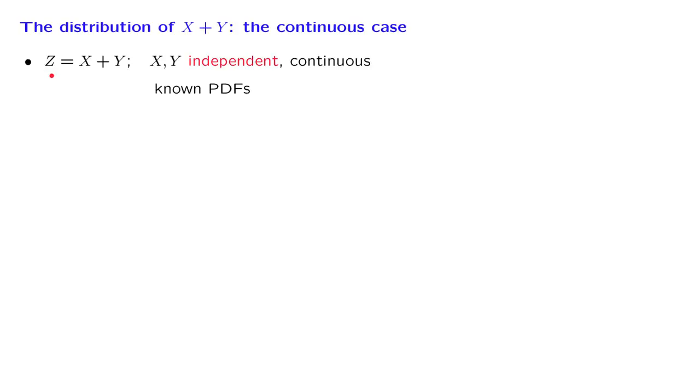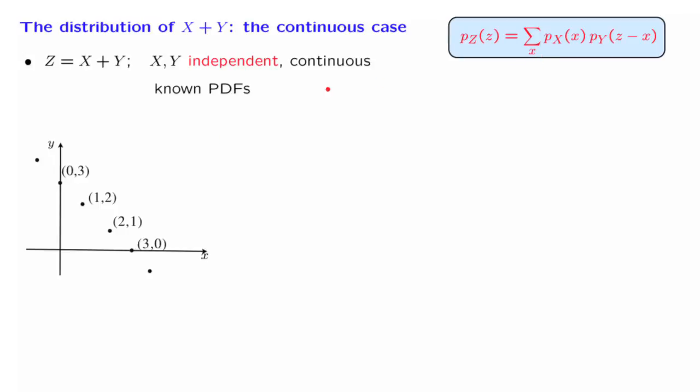The development is quite analogous to the one for the discrete case. In the discrete case, we obtained this convolution formula. This convolution formula corresponds to a summation over all ways that a certain sum can be realized. In this picture, these are all the ways that the sum of three can be realized.